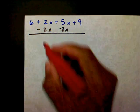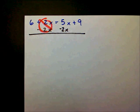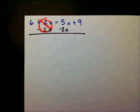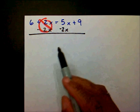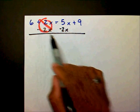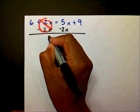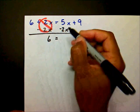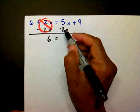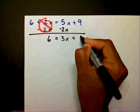This is going to create a zero pair. If you haven't watched my video on adding integers, please watch that — it will explain this procedure. That's going to leave me with 6 on the left, and 5x minus 2x is 3x, plus 9.